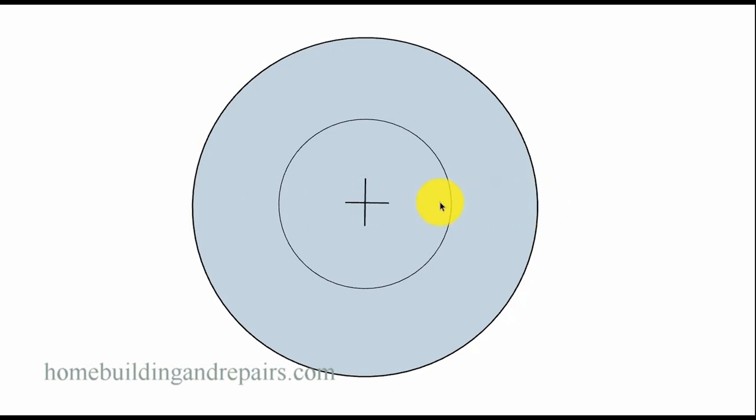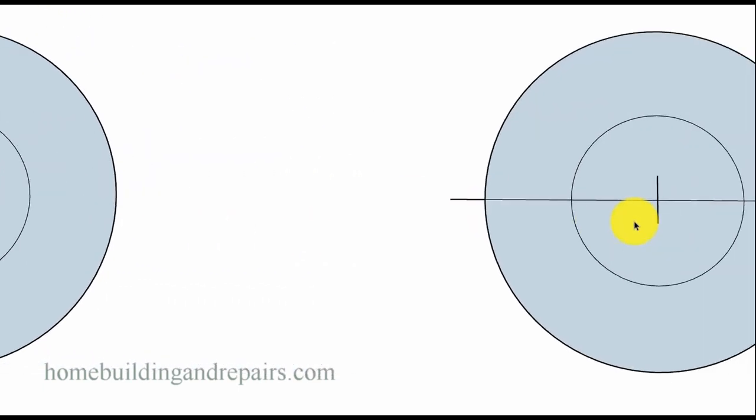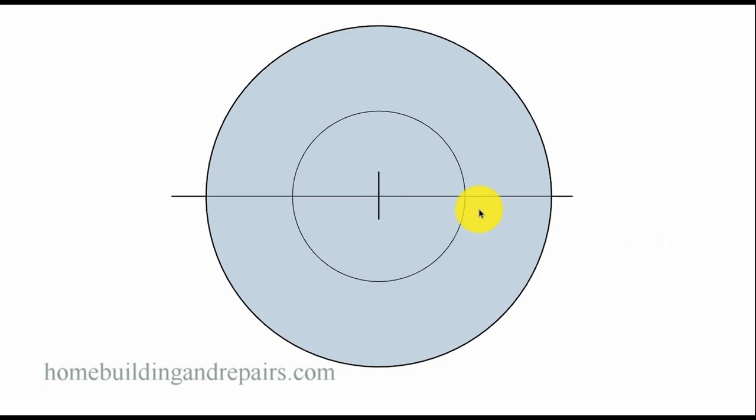And this is going to give us a three foot wide stairway. That is the minimum width for a residential set of stairs. Let's go ahead and draw a line down the center here. Remember, half of a circle, half of a donut stairway.